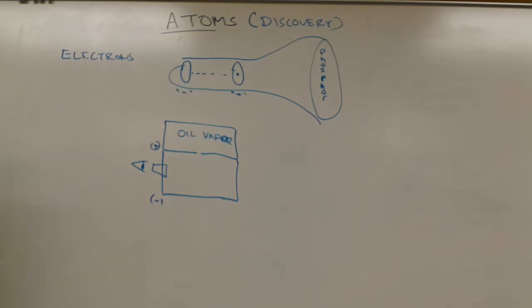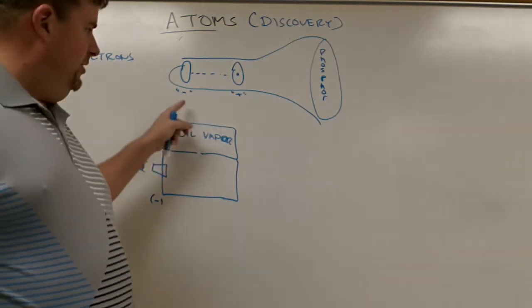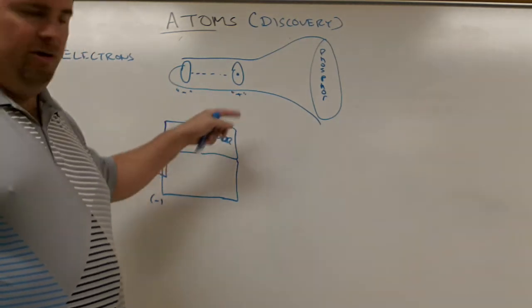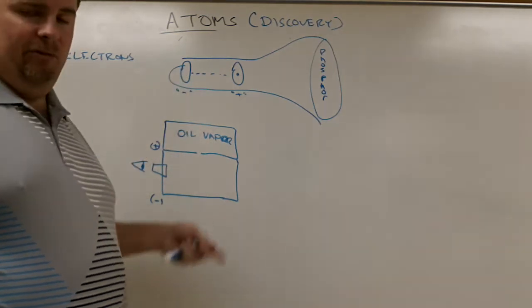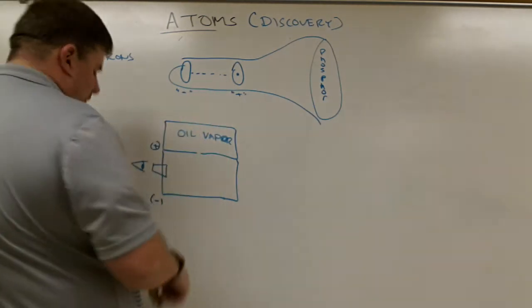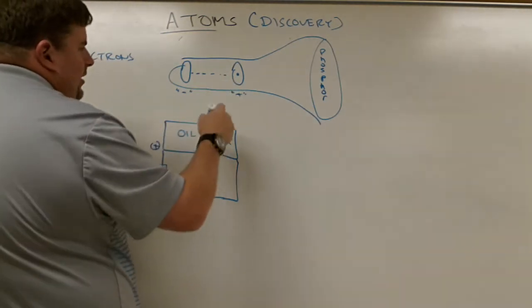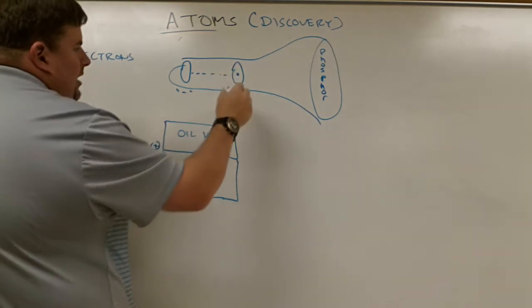The first experiment is the cathode ray tube experiment. The cathode ray tube was set up so that if you put a large voltage between two plates, one negatively charged, one positively charged, you would get a beam of cathode rays. The cathode rays would come off and aim towards this little positive hole, and some of them would pass through.